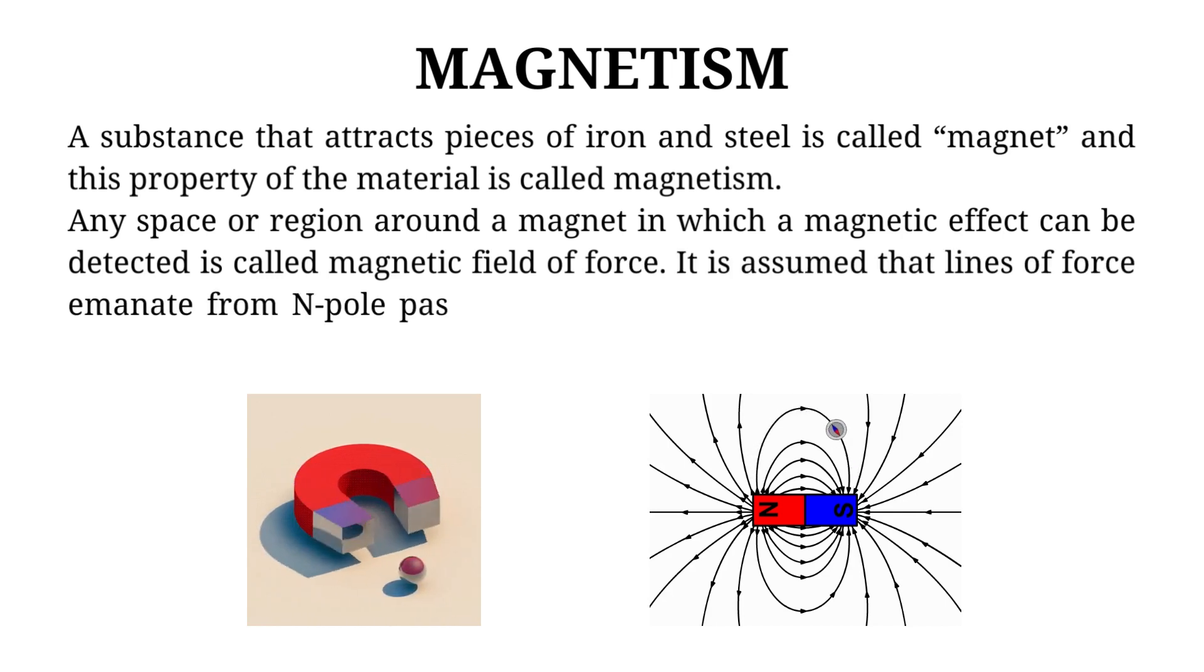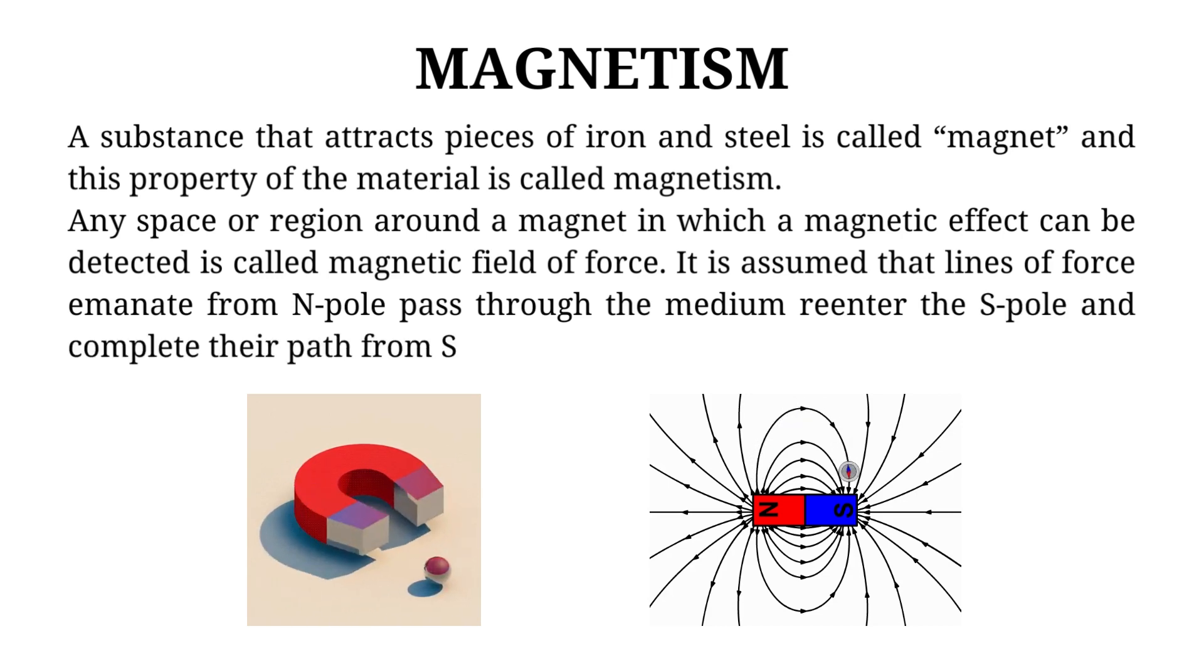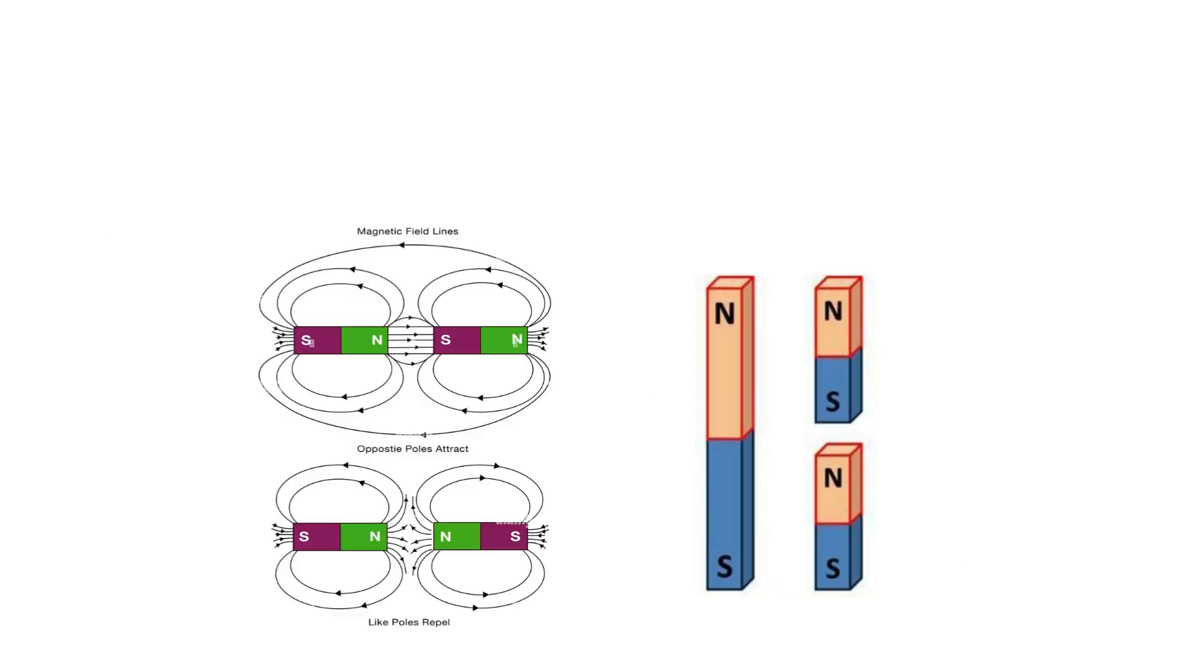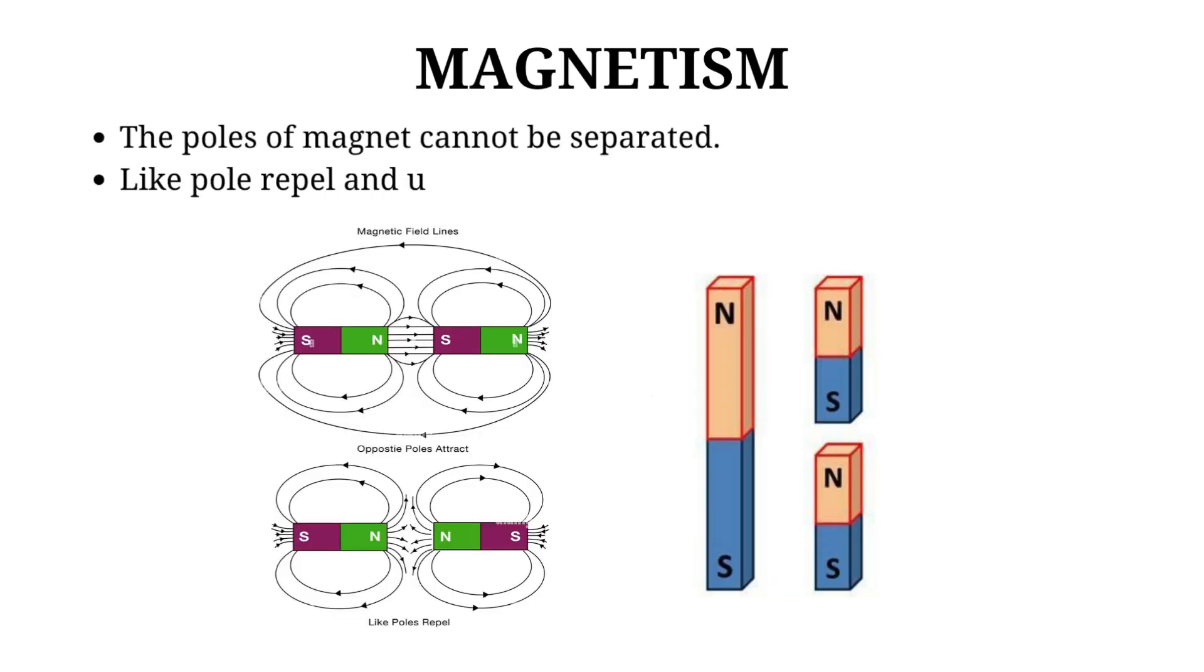It is assumed that lines of force emanate from n-pole pass through the medium re-enter the s-pole and complete their path from s to n-pole through the body of magnet. The poles of magnet cannot be separated. Like pole repel and unlike pole attract each other.